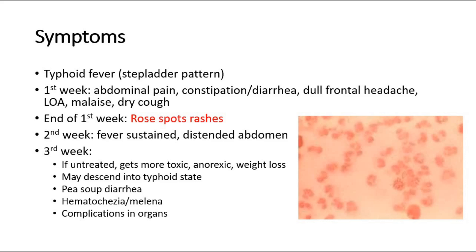The rose spot rashes, shown in the picture, are seen in around 25% of cases. They are described as salmon-coloured, around 1 to 4 cm in size, blanching in nature, and are due to bacterial emboli to the dermis of the skin.